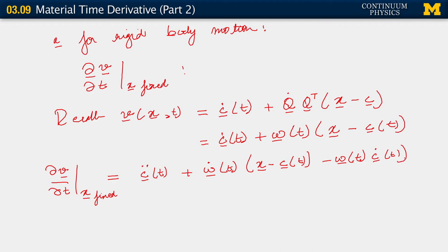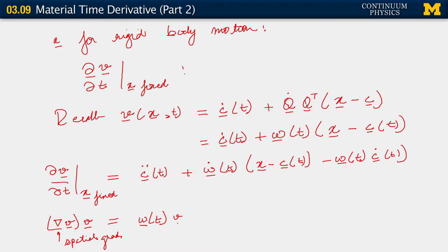Now there is another term we need to complete this expression for the spatial acceleration. Looking back at our expression for v parametrized by spatial position and time, and recalling that this operator here is the spatial gradient, we observe that the gradient of v — the spatial gradient of v — is simply omega, which is a function of time. And that acting on v just gives us omega acting on v.